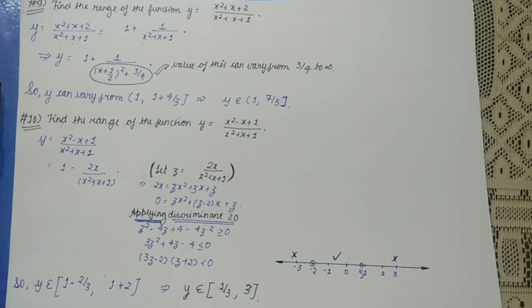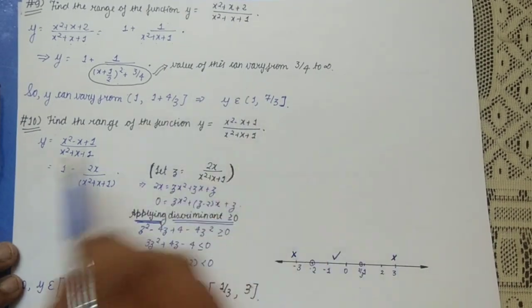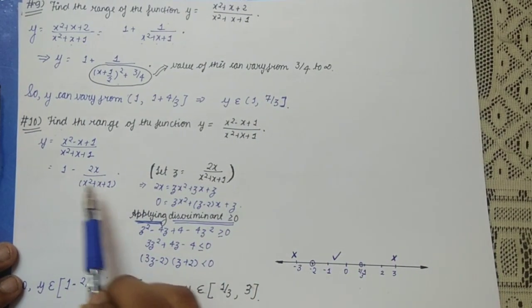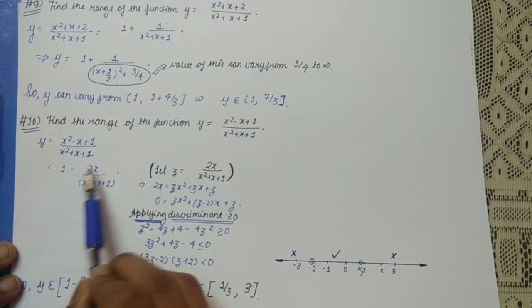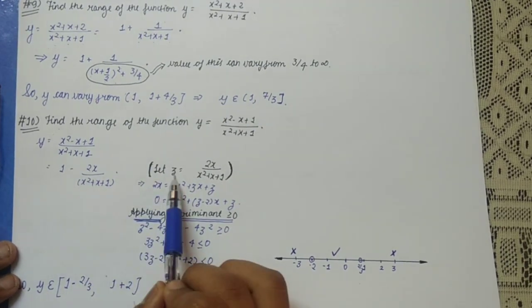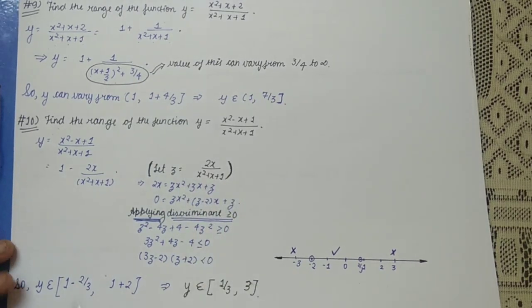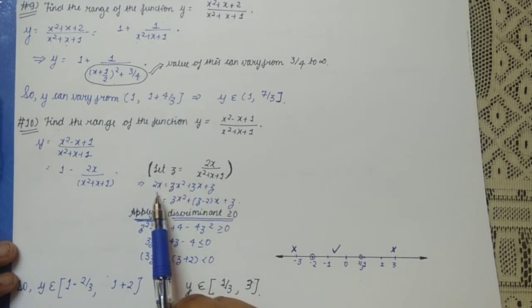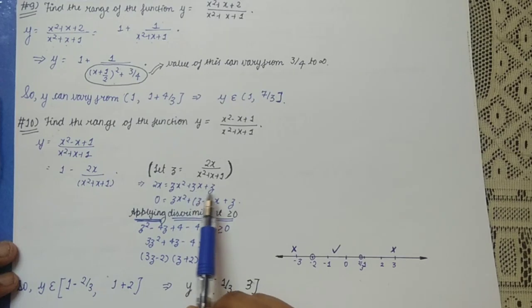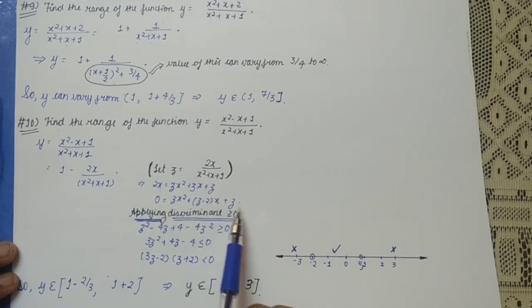Now let's find the range of y = (x² − x + 1) / (x² + x + 1). It might look similar to the previous question but it is not. We can write this as 1 − 2x/(x² + x + 1). Both terms are varying, so we set z = 2x/(x² + x + 1) and cross-multiply: 2x = zx² + zx + z, giving 0 = zx² + (z − 2)x + z.